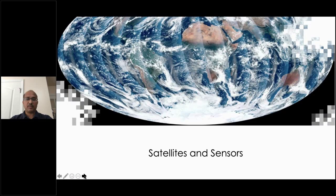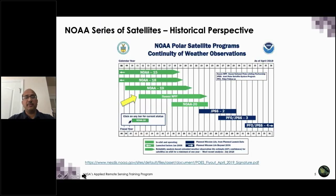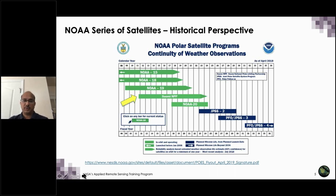Before we move on to the datasets, I want to give a brief historical perspective. VIIRS is more of a NOAA mission, and NOAA has a historical view of looking at global weather through various polar orbiting satellites — this is called the NOAA polar satellite program. The objective is to get continuous weather observations from all around the world. NOAA has been launching satellites called NOAA 14, 15, 18, and 19.